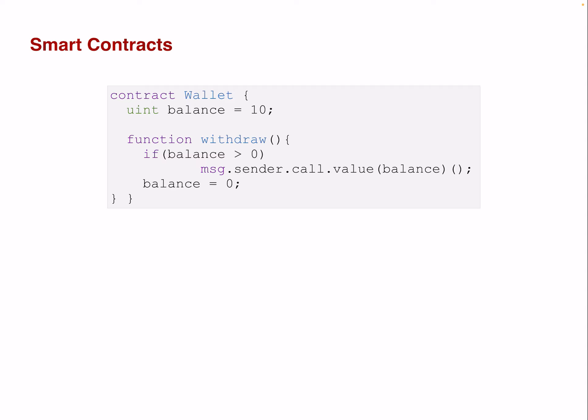Be careful — there's a difference between tx.origin and message.sender. After this has been performed, the balance is set to zero.